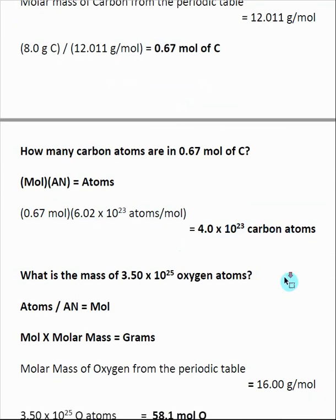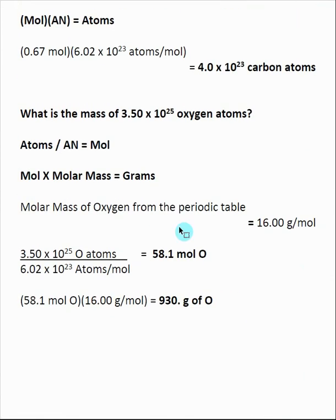And so we can go the other way, and a lot of the times they have you go completely in one direction. So here we're starting with atoms, and we're going all the way to mass, or the number of grams. I give you a certain number of oxygen atoms, and I say, what's the mass of those oxygen atoms?